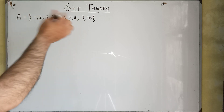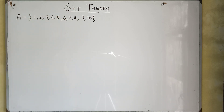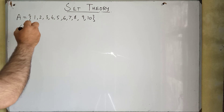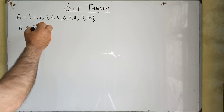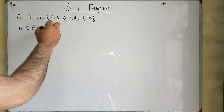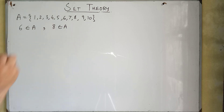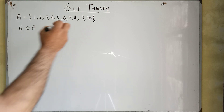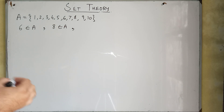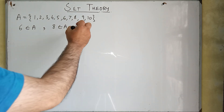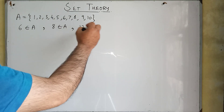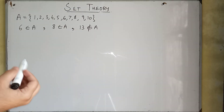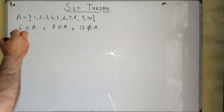1, 2, 3, and so on — all these numbers are elements of set A. So we can write '6 belongs to A' because 6 is an element of A. Similarly, we can write '8 belongs to A' because 8 is an element of A. But we can see that we don't have 11, 12, or 13 here, so we can write '13 does not belong to A' because 13 is not an element of this set.